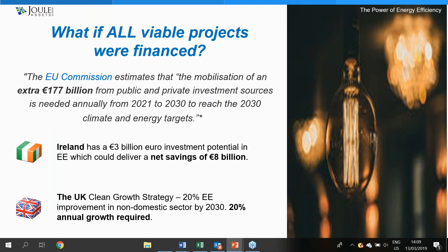The numbers don't lie. Achieving what we need to achieve collectively is an enormous undertaking. The European Commission estimates that the mobilization of an extra 177 billion euros from public and private investment sources is needed annually from 2021 to 2030 to reach our 2030 climate and energy targets. That's an absolutely astronomical sum. At Juul, our key question is: what if all viable projects were financed and actually implemented, and what if that happened sooner rather than later?